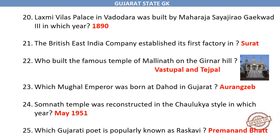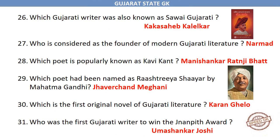Which Mughal emperor was born at Dahod in Gujarat? Aurangzeb. Somnath Temple was reconstructed in the Chalukya style in which year? May 1951. Which Gujarati poet is popularly known as Raskavi? Premanand Bhat. Which Gujarati writer was also known as Sawai Gujarati? Kaka Sahib Kalelkar.